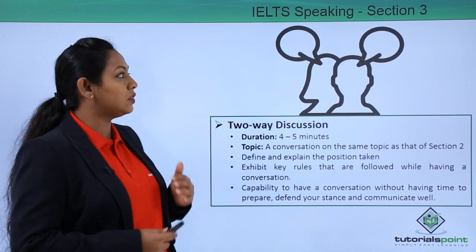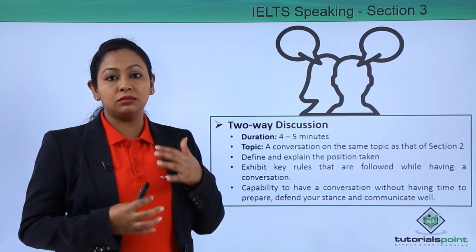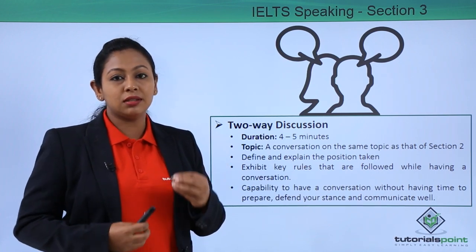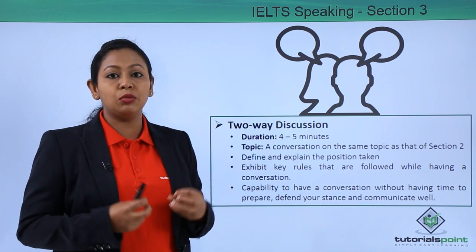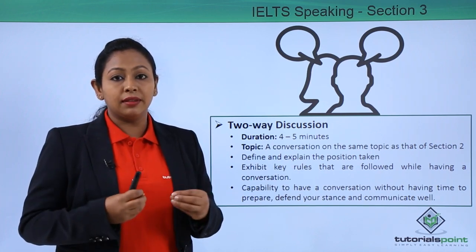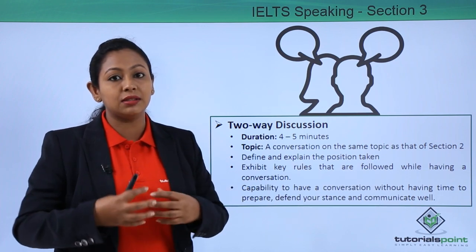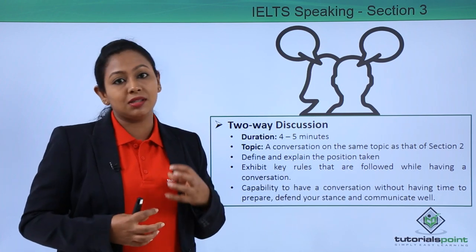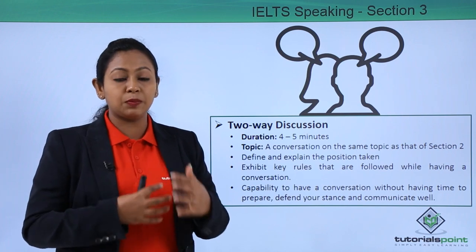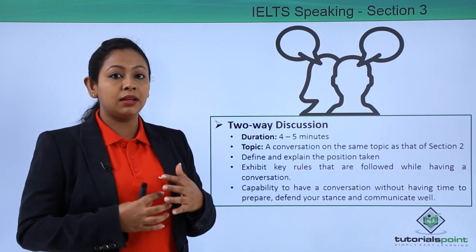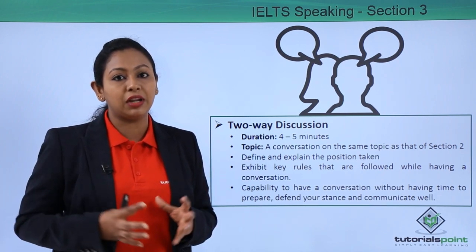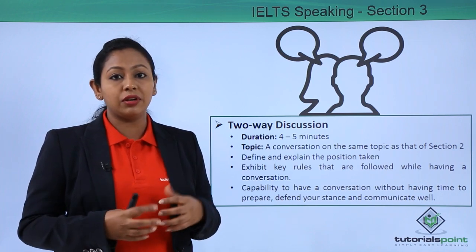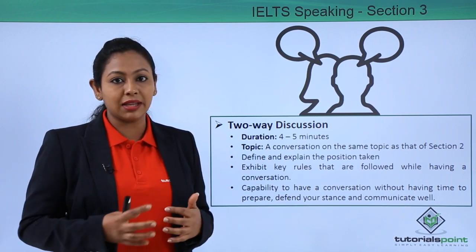Moving on to the third section — the discussion will continue as a two-way discussion, based on the topic given to you in section 2. This usually lasts for a duration of four to five minutes. Here you will have to explain why you have taken a particular stance. The examiner might ask why you chose to defend or go against the topic, or why you explained something in a particular way. The examiner is checking your ability to have a discussion without any preparation time, so be very confident and clear.